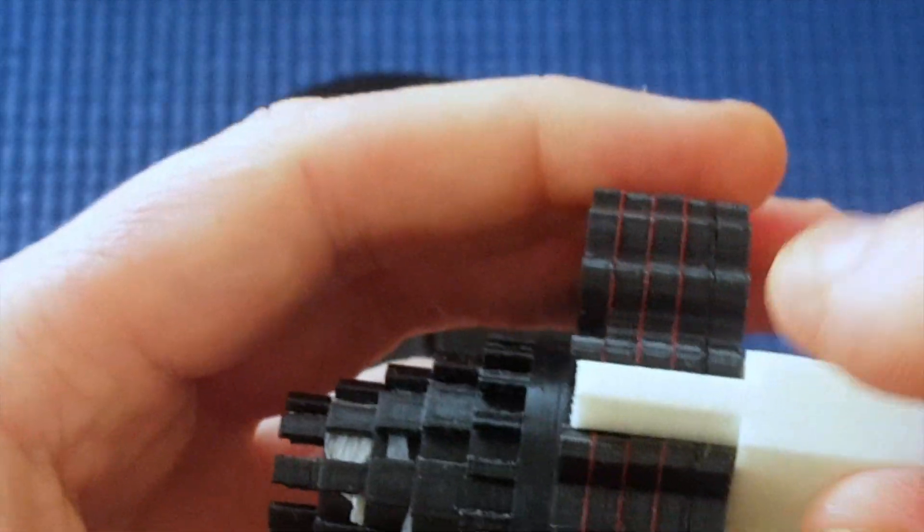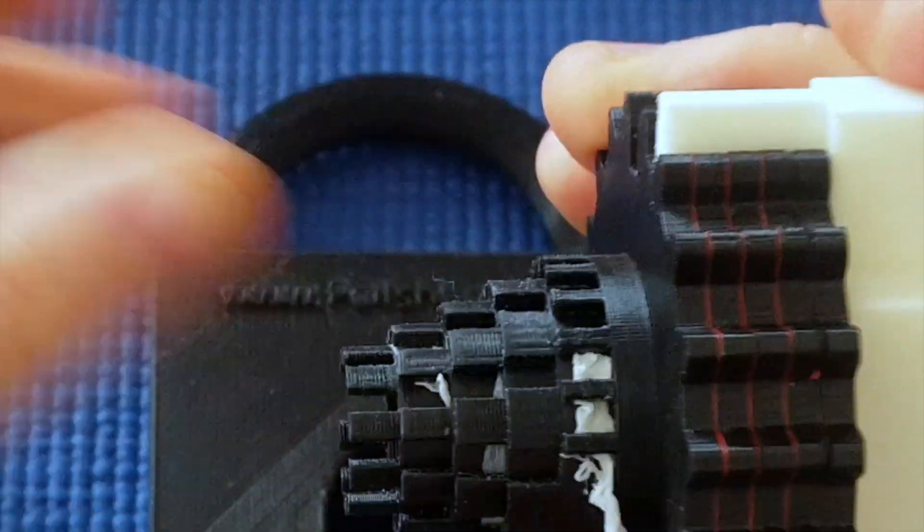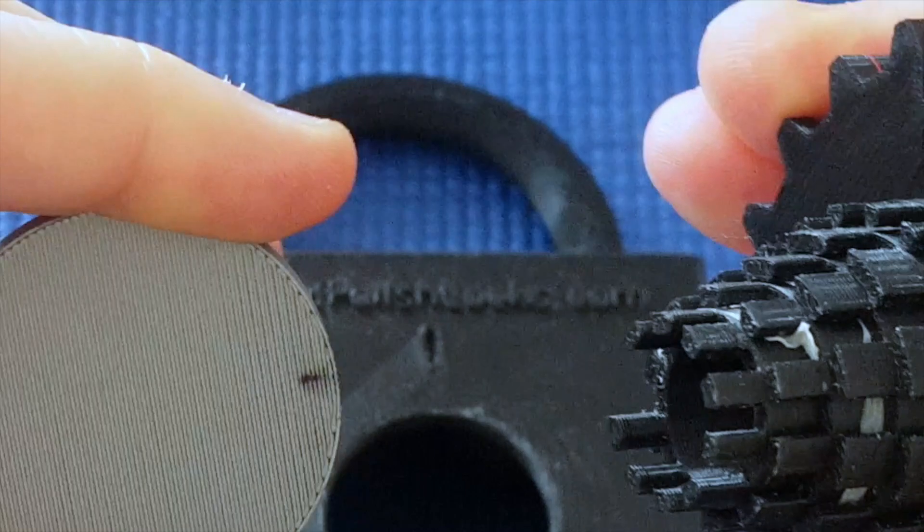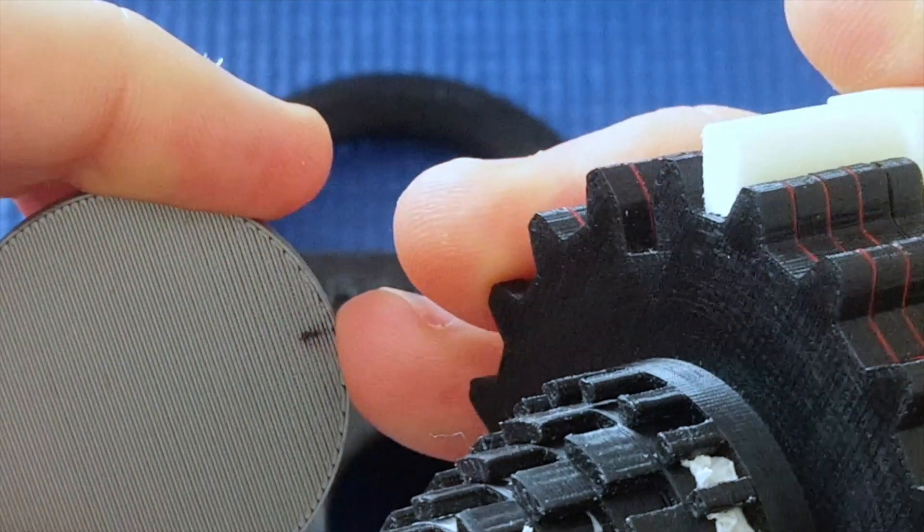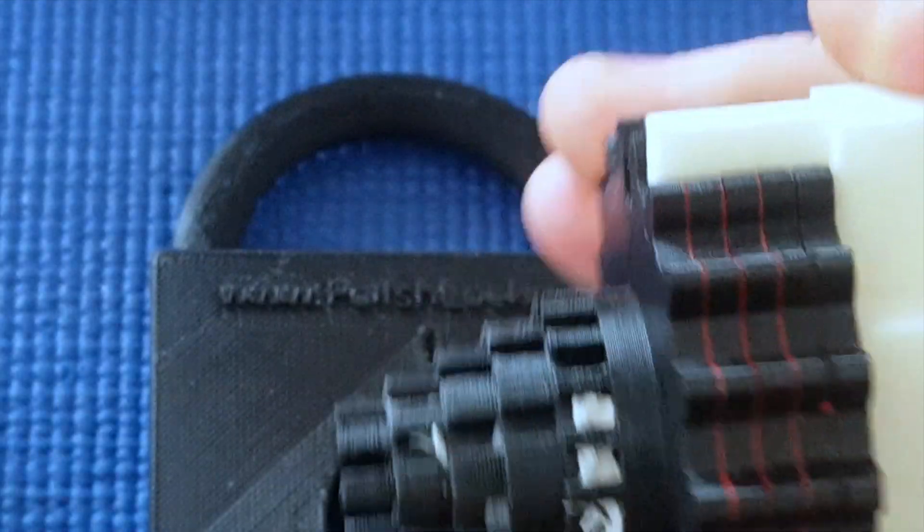then not hard enough to break it, but hard enough to make it flex just a little bit, then it means that I can turn this knob slightly more, enough to be able to detect whether I'm onto a false gate or a true gate.